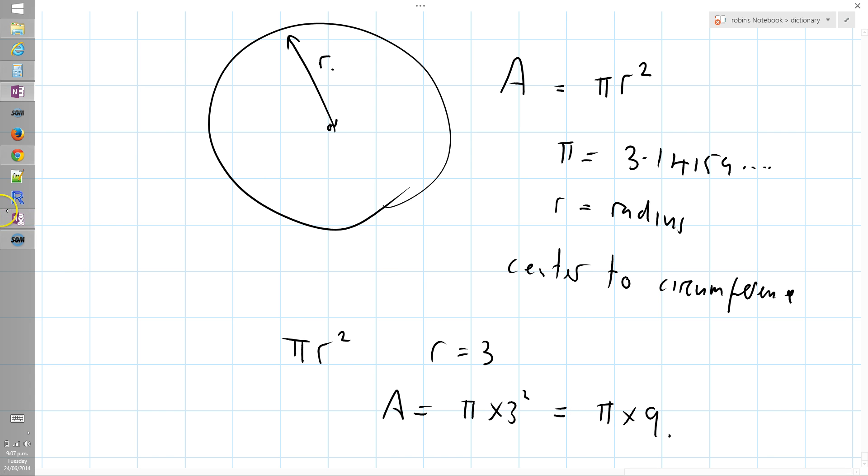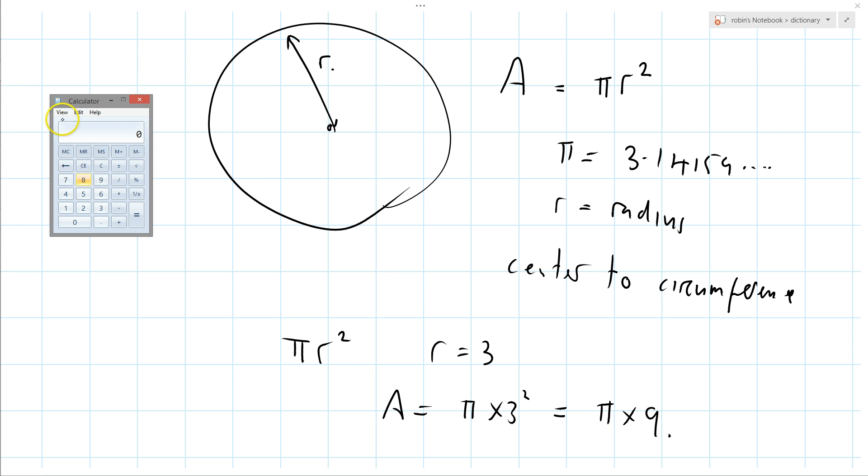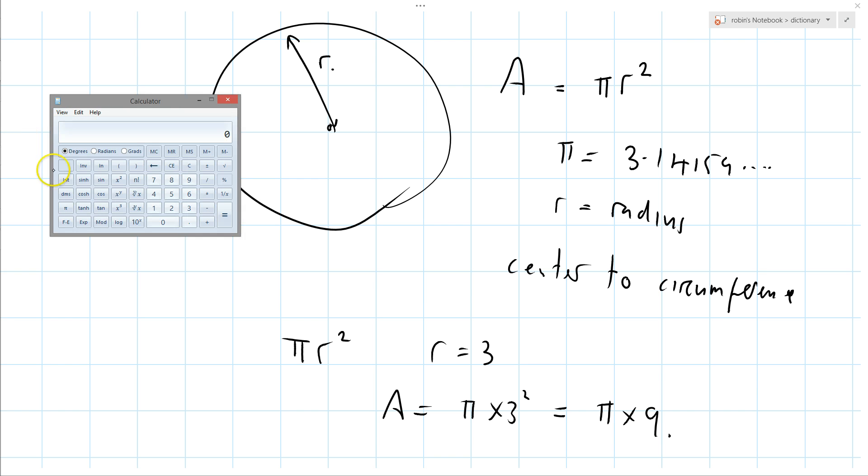And if I wanted an answer, I'd get my calculator, which is here. If I go to scientific view, I think I've got pi here. Yeah, there's pi. 3.1415 and all these other digits here. Times 9, because that 9 is there, it's 3 squared.